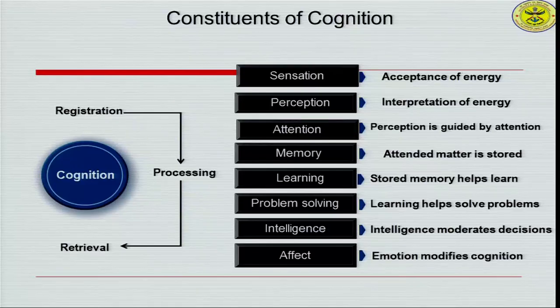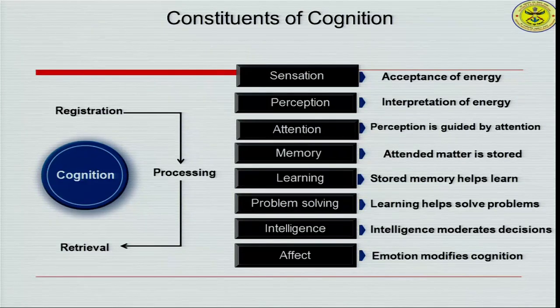Intelligence is also affected by some kind of emotional inputs, which modifies our cognitive system. So apart from affect, all other steps — right from sensation to intelligence — are different constituents of cognition. When we study cognitive science, we study them as a whole process, or we study unitary concepts at various levels of sensation, perception, attention, memory, learning, problem solving, and intelligence.